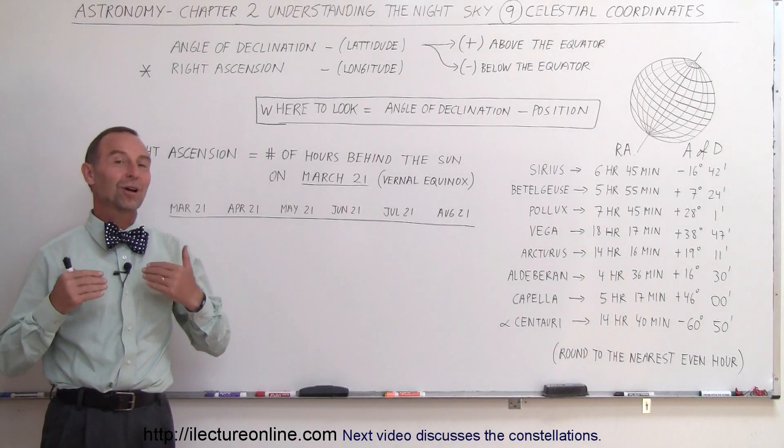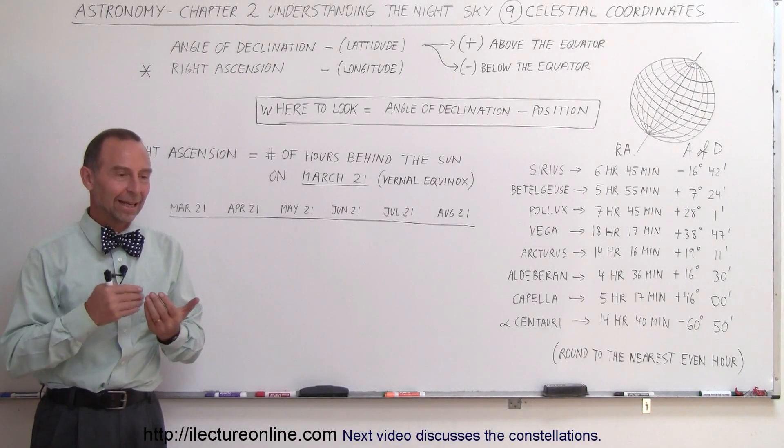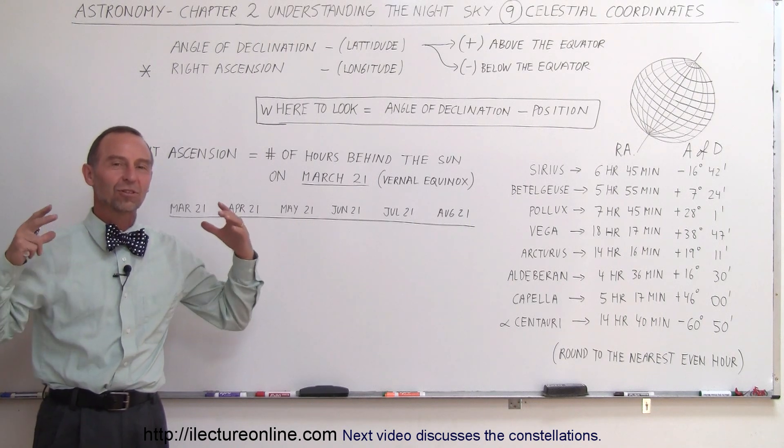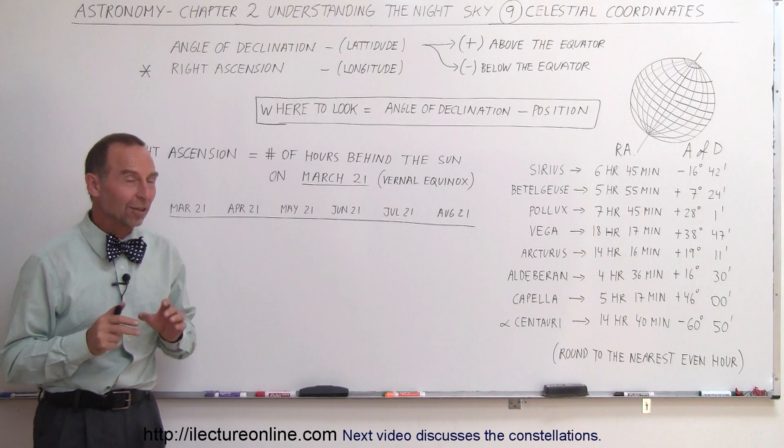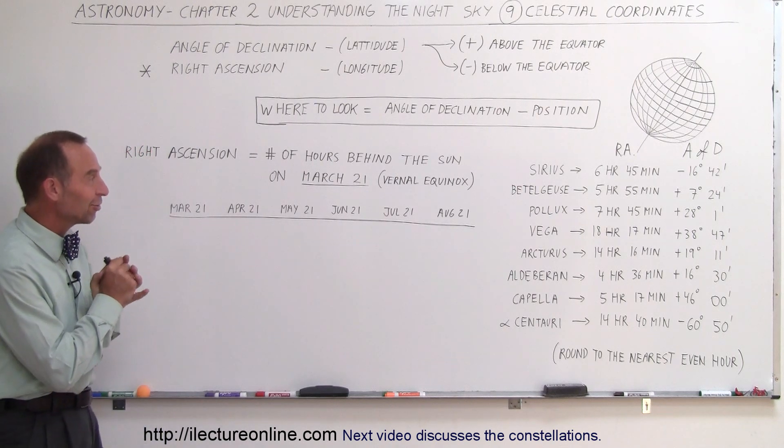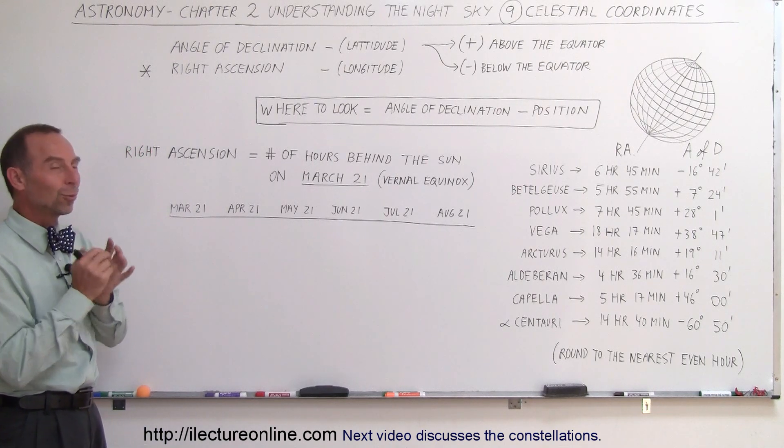Welcome to our Lecture Online, and now we're going to talk about Right Ascension. It's one of the two coordinate systems of the celestial sphere, the one that's probably the more difficult one to understand. So let's try to pay close attention to this. Alright, what does Right Ascension mean?